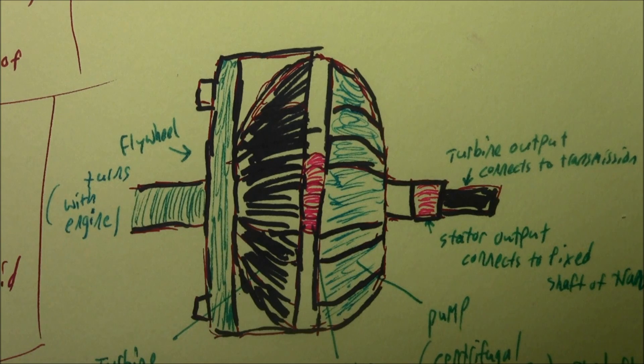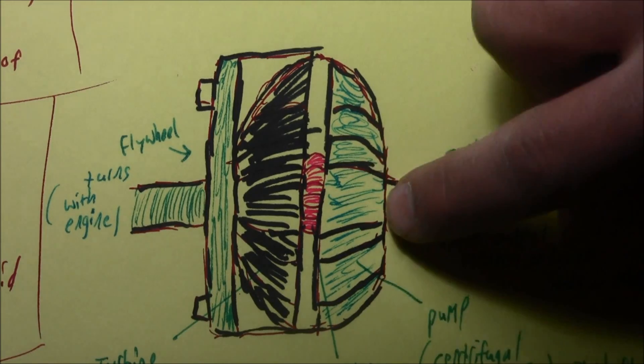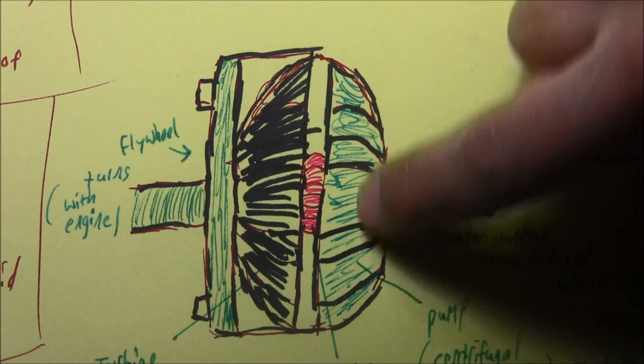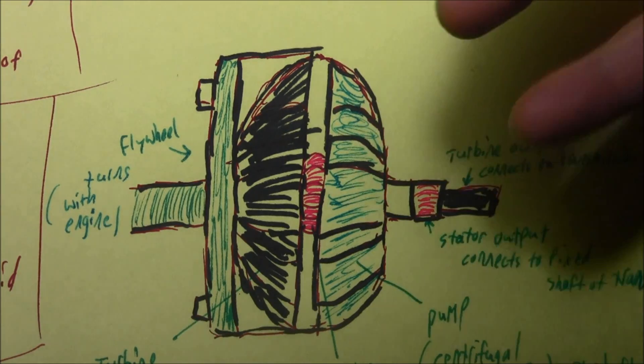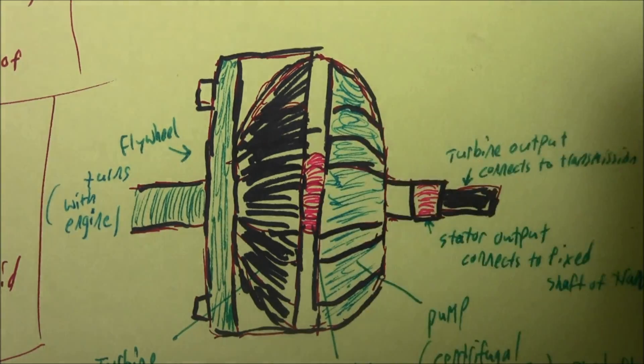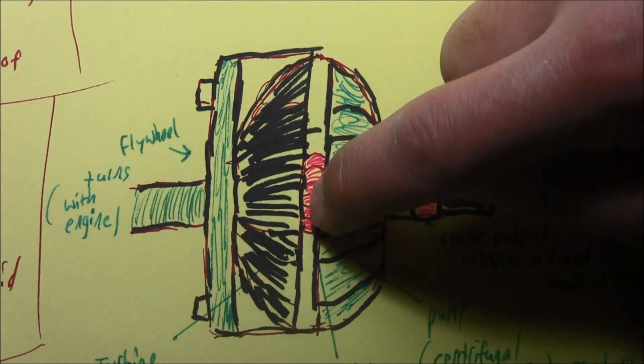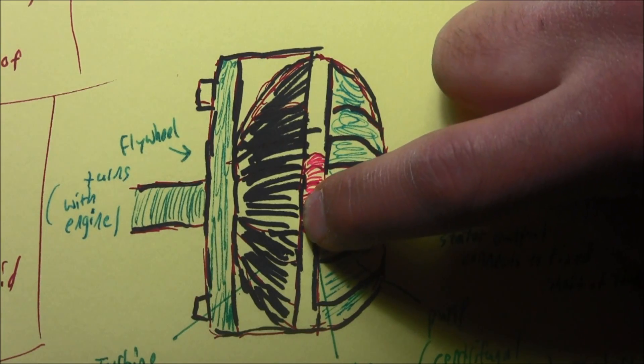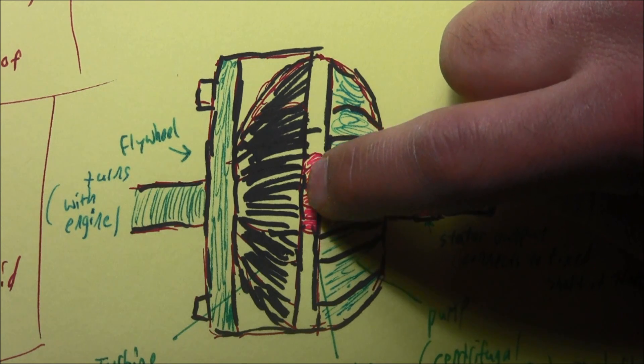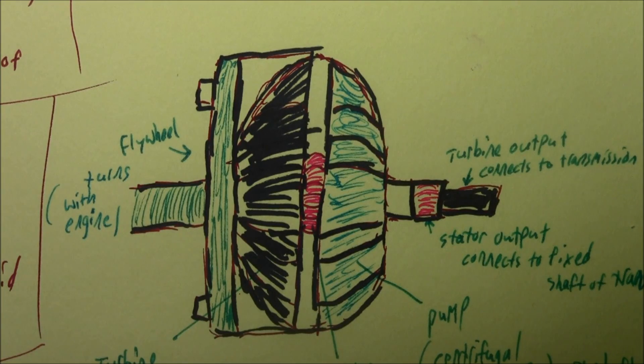The four components of the torque converter are: a pump, which is right here, this area right here, the pump which is basically an impeller; the stator, which is housed in the middle and stays stationary. Only at high speeds does it move. The whole thing revolves. It's stationary, but the whole thing moves only at high speeds. It's basically a one-way clutch.